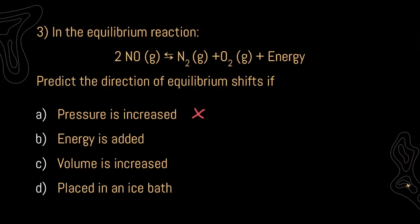If I add energy, energy is on my product side, so I'm going to be increasing my number of products, and it's going to shift my reaction to the left towards my reactants. To see what happens when we change our volume, we have two moles on our reactants and two moles on our products, so if we increase our volume, we're going to have no change. Lastly, if we place it in an ice bath, we're going to lower our temperature, lowering the amount of energy in our system, so it's going to shift our equilibrium to the right towards our products.